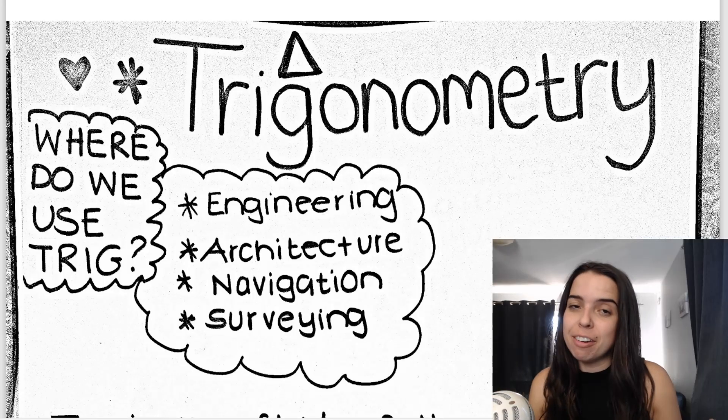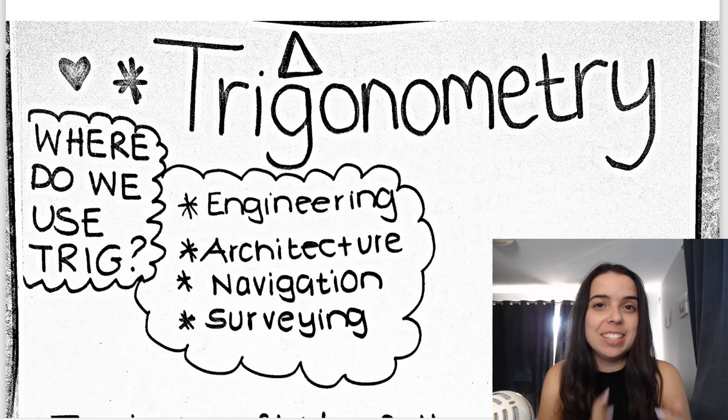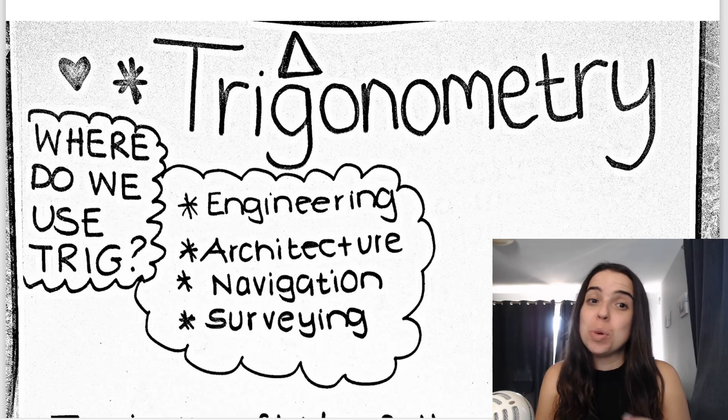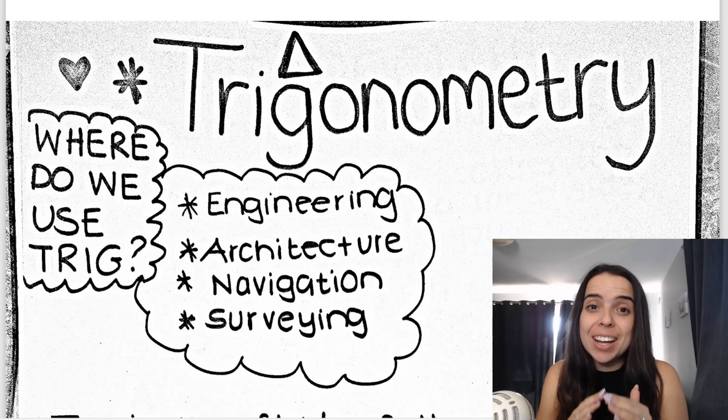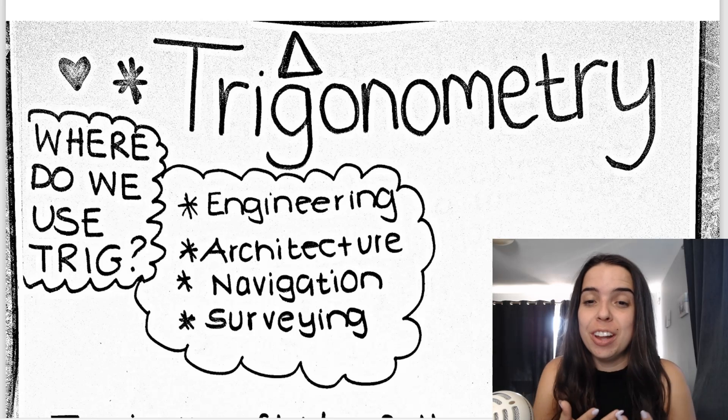I'll also show you how to write the basic trig ratios for an angle — for example, how to write sin of an angle, what that's equal to, and how to find it using a right-angled triangle. So let's jump right in. Trigonometry is a very important section that you'll learn in maths. You'll learn it in grade 10 and carry it through to grade 12. It's a really cool section — we work in triangles, and it has a lot of applications in real life.